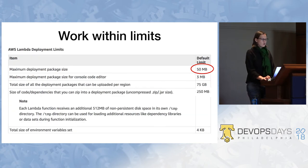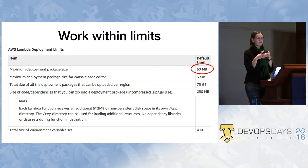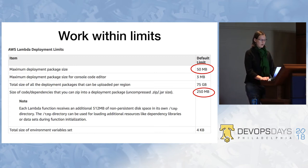But you can only upload a zip file of up to 50 megs — all your dependencies, all your code, anything else you might need — the only way to get it in is to zip it to 50 megs. Additionally, when that file is unzipped it has to be less than 250 megs. So you're all thinking right now: there's no way Chrome fits within these limitations — a 250 meg binary of Chrome, no way. We'll talk about how we get around that in a second.